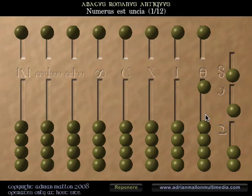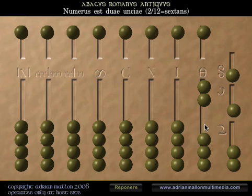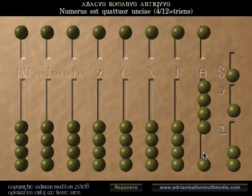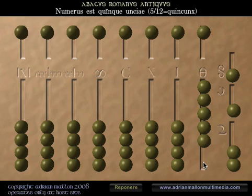Uncia? Una uncia? One ounce. Due unciae? Two ounces. Tres unciae? Three ounces, or three twelfths, if you like. Quattuor unciae? Four ounces, or four twelfths. Quinquai unciae? Five ounces, or five twelfths.